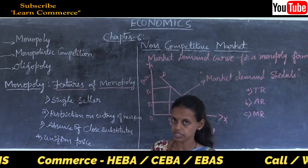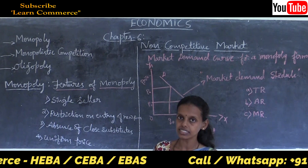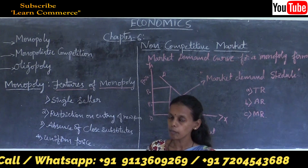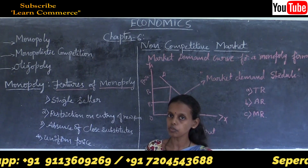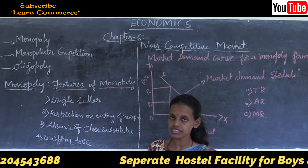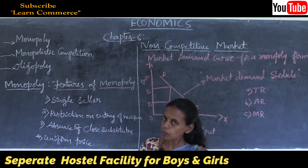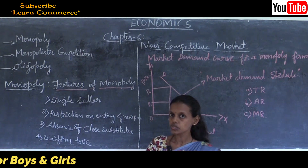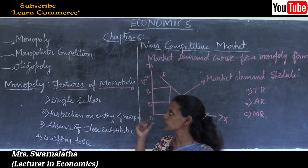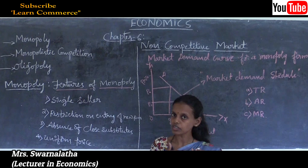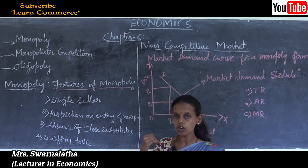Chapter four is the theory of the firm under perfect competition. As we studied, perfectly competitive markets are those markets with a large number of buyers and sellers dealing with homogeneous products. That chapter is directly linked to chapter six on non-competitive markets, where there is no competition between firms in the market.